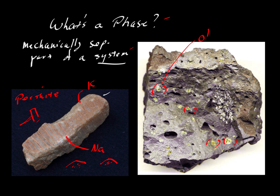Then there's this black material that forms the matrix, which looks like it is probably mostly glass. There might be other minerals — if we magnified this area we might find other phases — but for the time being, let's pretend that what we see is all there is. So we have two phases: olivine and glass.